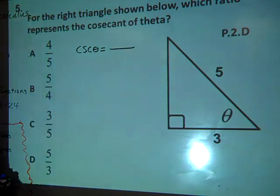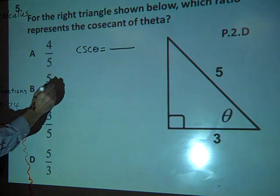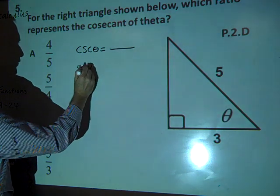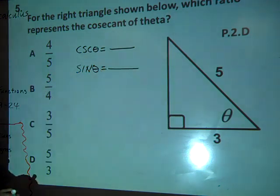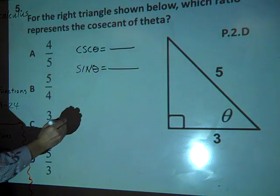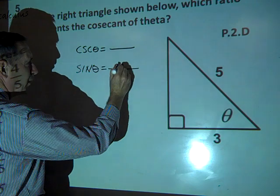Cosecant theta, what is going to be the reciprocal relation to cosecant? Sine. So let's look at sine. I have an easier time remembering what sine is. So sine is going to be opposite over hypotenuse.